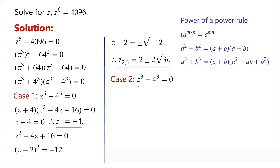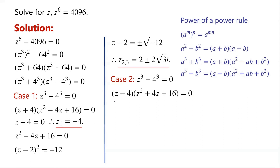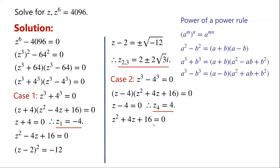Now for z cubed minus 4 cubed equals 0. We know that a cubed minus b cubed equals (a minus b) times (a squared plus ab plus b squared). By applying this, we can write (z minus 4) times (z squared plus 4z plus 16) equals 0. So either z minus 4 equals 0, giving z equals 4, or z squared plus 4z plus 16 equals 0.